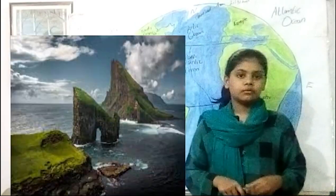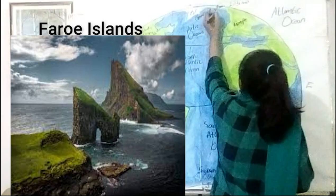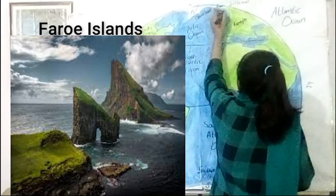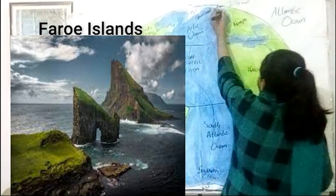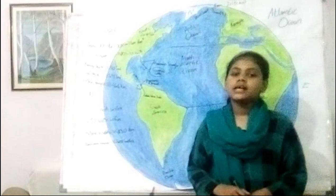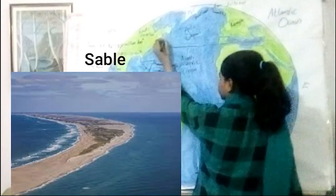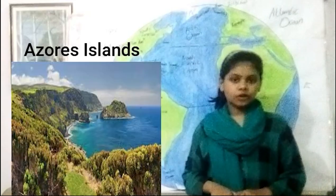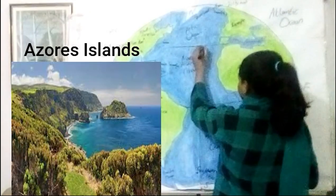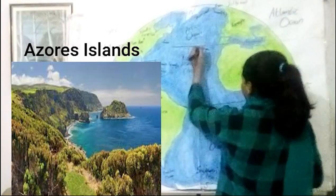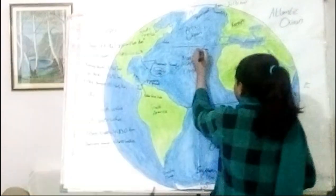The first group is the Azores, which has 18 islands. Then there is Sable, and the Azores, which is a group of nine islands.